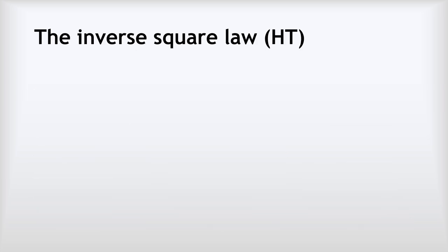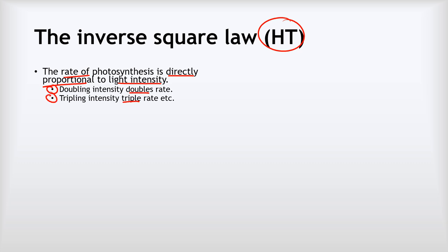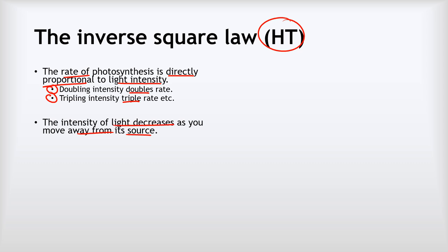Now we're going to look at higher tier material: the inverse square law, which helps us understand the relationship between light intensity and the rate of photosynthesis. If you're doing foundation tier, skip this section. The rate of photosynthesis is directly proportional to light intensity — doubling light intensity doubles the rate, tripling it triples the rate. As you move away from a light source, its intensity decreases. You may have experienced needing to move closer to a lamp to read clearly. The exact decrease is described by the inverse square law: intensity is proportional to 1 divided by the distance squared (I ∝ 1/d²).